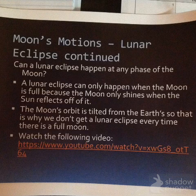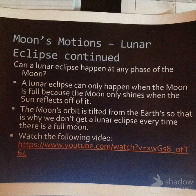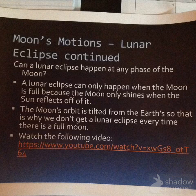What I'd like you to do now is pause this video and go to the second video found on Google Classroom to watch an animation of a solar and lunar eclipse. This will help solidify your understanding of the position between the Sun, Moon, and Earth, what is blocked out, and why those eclipses occur.